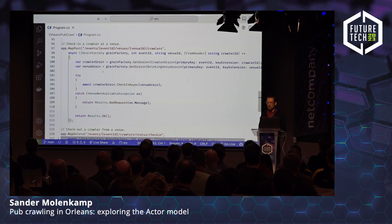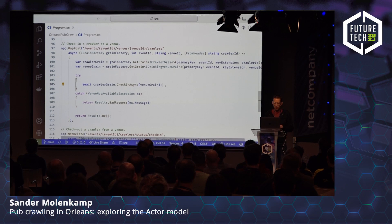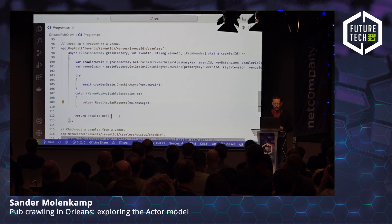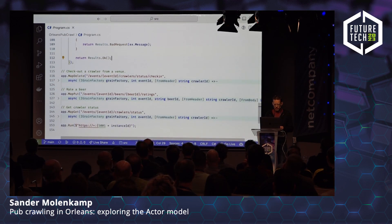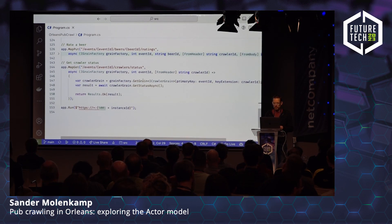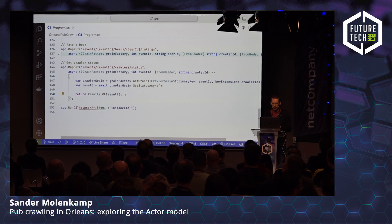The first endpoint handles checking in a crawler at a venue. A check-in request comes in from the app, and we call the check-in method on the correct crawler grain. Using the grain factory (injected because Orleans is configured), I use the compound key parts — event ID and crawler ID — to get a reference to the crawler grain, and do the same for the venue grain. Then I call the check-in method on the crawler grain and pass in the venue. If the venue isn't even part of this event I get back a VenueNotAvailableException, which I turn into a bad request. Otherwise, I return OK. The second endpoint simply gets a crawler status — get the reference, call GetStatusAsync, and return it.